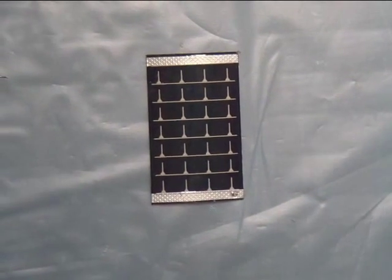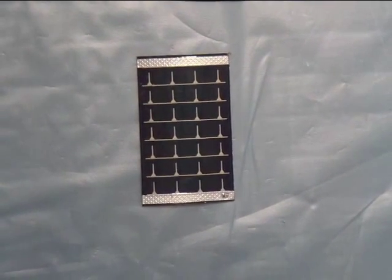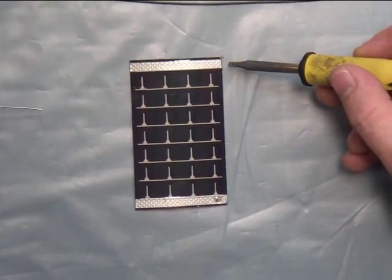All right, we're going to solder on the OEM module first. This is the negative side of the solar module.